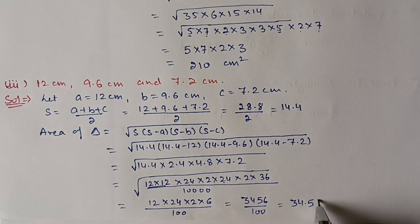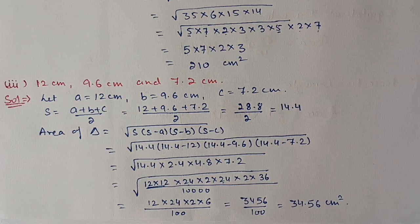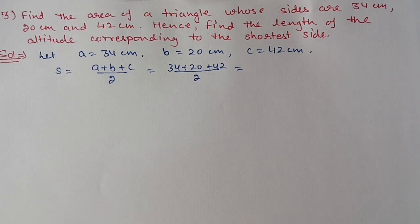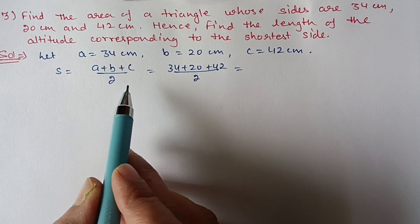Question three: find the area of a triangle whose sides are 34 cm, 20 cm, and 42 cm. Hence find the length of the altitude corresponding to the shortest side. Since all three sides are given, we will use Heron's formula.